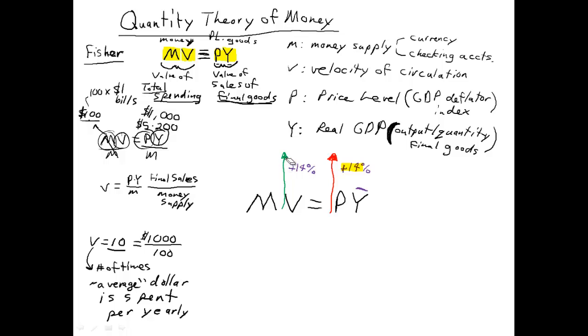So what that means is we're going to have to rule out velocity as our causal factor. What does that leave us with? Well, that leaves us with the money supply. And in terms of the quantity theory of money, when we see a big increase in the price level, what that means is we're going to have to see a proportional increase in the quantity of money.